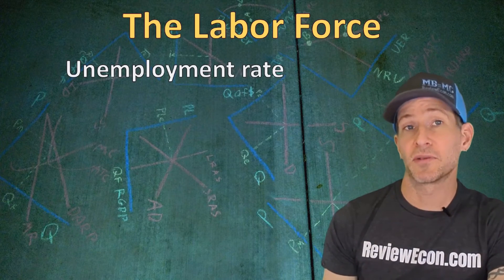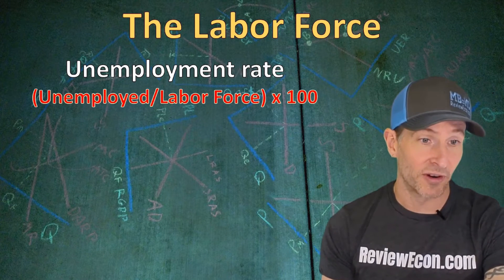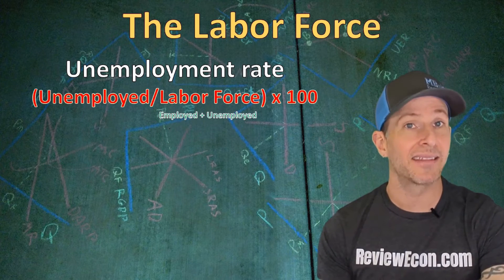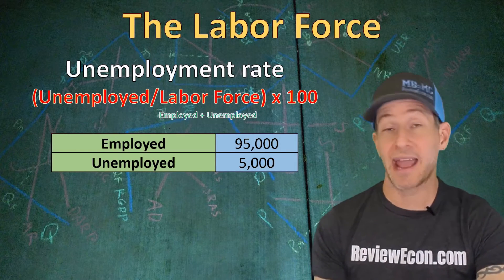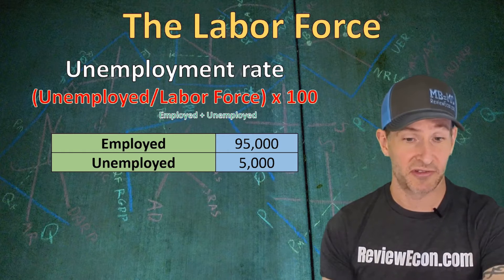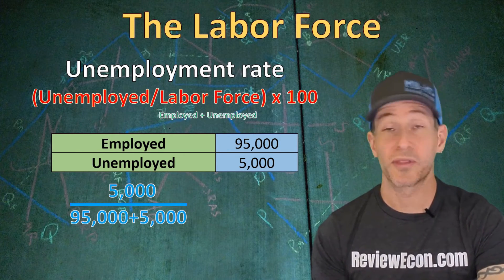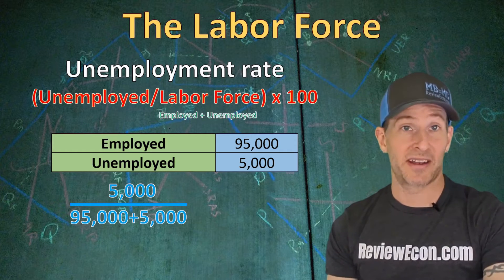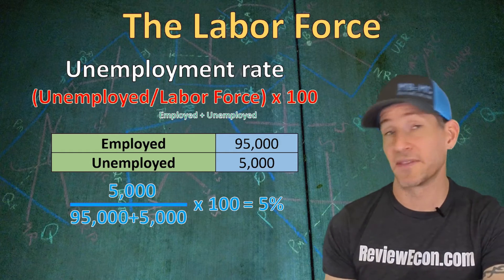To calculate the unemployment rate, take the number of unemployed people, divide that by the entire labor force, and multiply by 100. The labor force is both the employed and unemployed people added together. For example, if an economy has 95,000 employed people and 5,000 unemployed people, you divide 5,000 by 100,000 and multiply by 100, giving us a 5% unemployment rate.